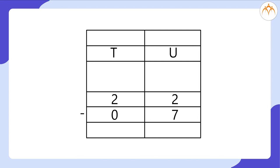As I had change in the form of only 2 coins of 1 rupee each and had to give 7 rupees, it was not possible. That means I could not subtract 7 from 2.